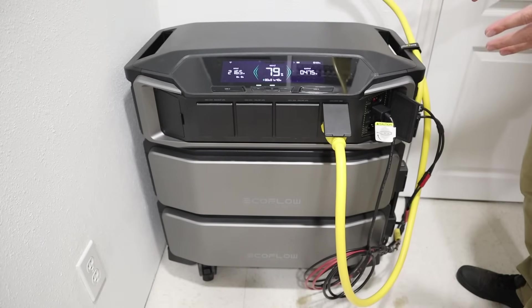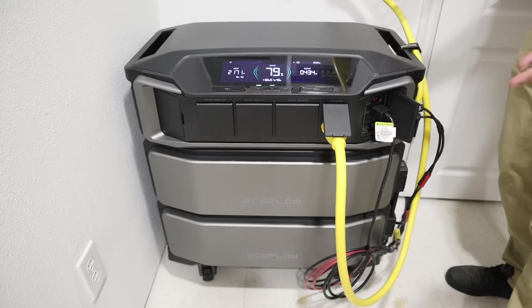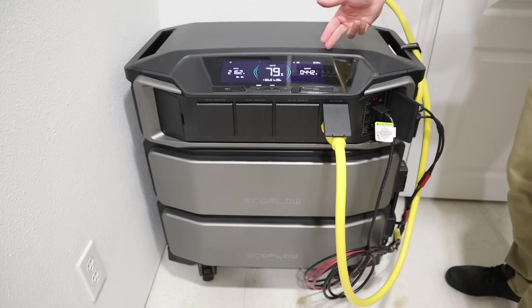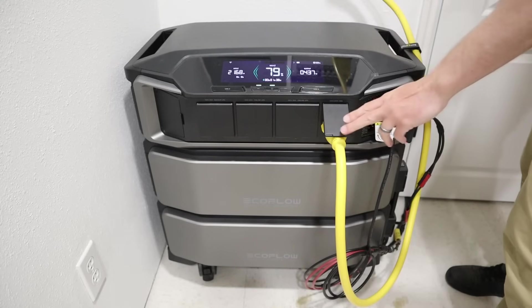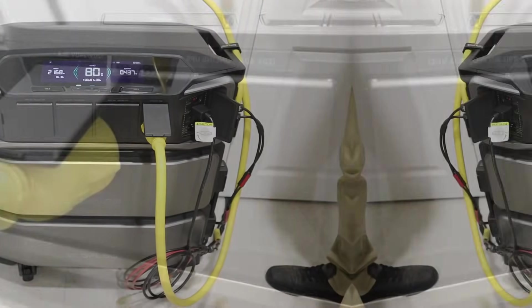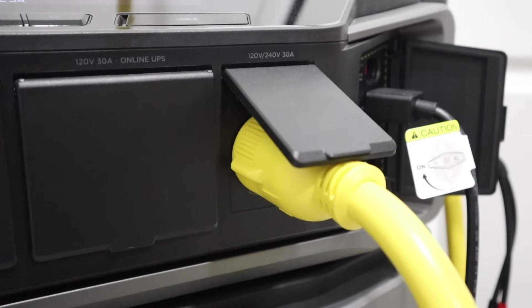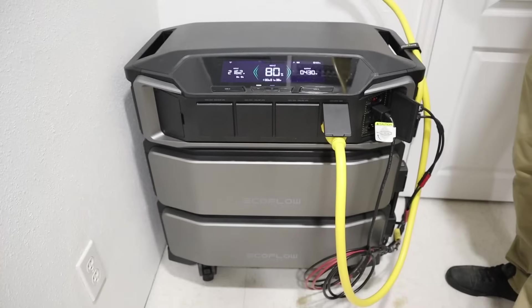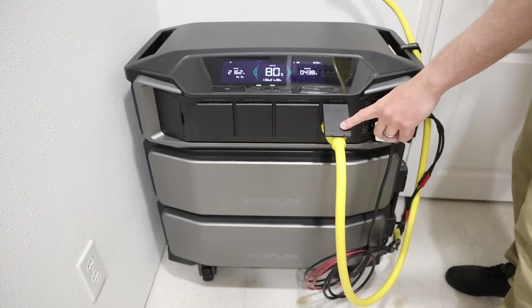If you haven't seen one of these units before, this is called a power station. It's kind of like a plug and play home backup. On the top, you have the brains of the unit. This is the inverter and charging system. You also have a display showing what's going on currently with the unit. You have multiple outputs. This has a 7,200 watt, 240 volt split phase inverter, meaning you can power up to 7,200 watts of devices using this output.